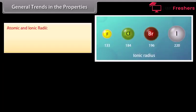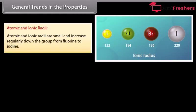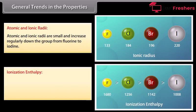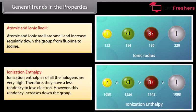Atomic and ionic radii are small and increase regularly down the group from fluorine to iodine, because new electronic shells are added. Ionization enthalpy of all halogens is very high; therefore they have a lesser tendency to lose electrons. However, this tendency increases down the group because the distance of the valence shell from the nucleus increases.